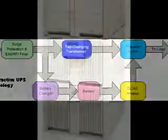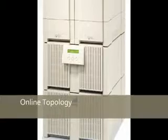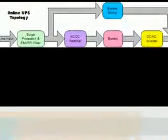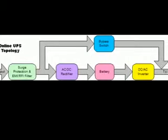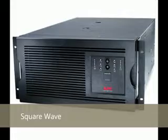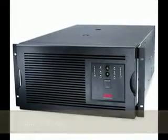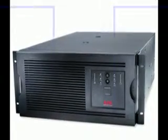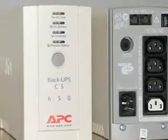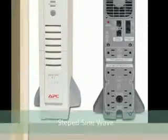The on-line topology is designed so that continuous power to the load is made through the DC/AC inverter. The square wave inverter waveform is suitable only for power devices that have their own internal power supply. The step sine wave inverter attempts to simulate a true sine wave.